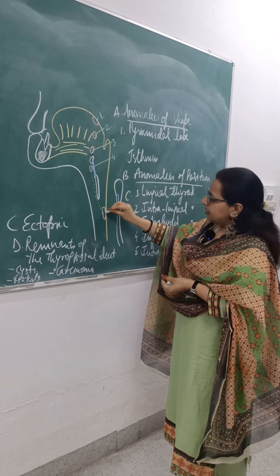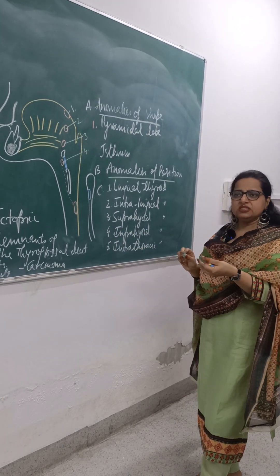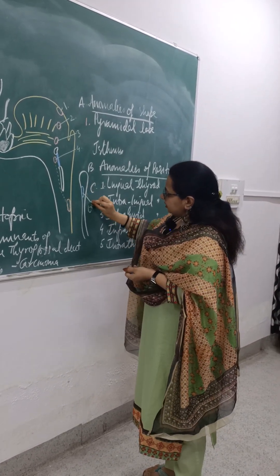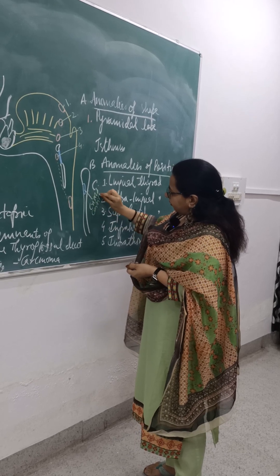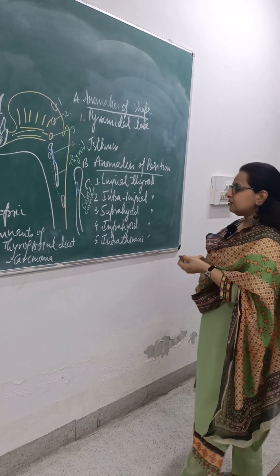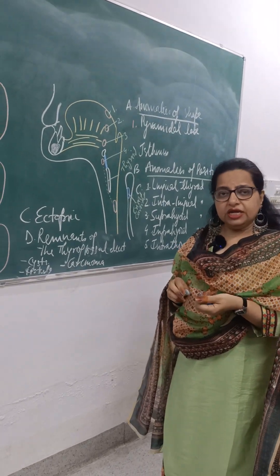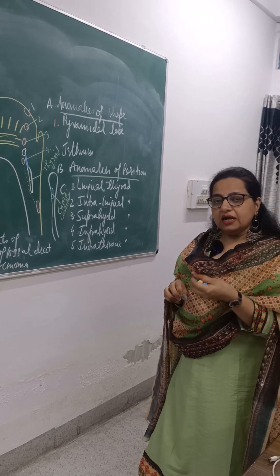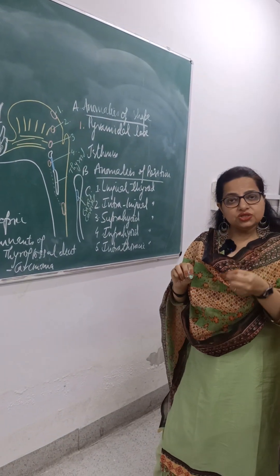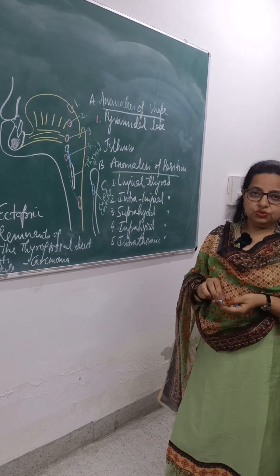Otherwise the normal course is taken and the thyroid comes to lie in front of the trachea at the level of C5, C6, C7, and T1 — this is the normal position of the thyroid. Then there might be ectopic thyroid tissue, which is thyroid tissue present outside its normal passage. Whereas the anomalies of position relate to arrest along the thyroglossal duct passage, ectopic thyroid tissue is present anywhere other than that pathway.